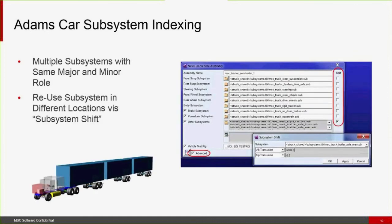Lastly on this front, I want to talk about ADAMS car subsystem indexing. This allows multiple subsystems with the same major-minor role, allowing reuse of a subsystem in different locations via a subsystem shift capability. Imagine trying to build a multi-trailer heavy vehicle — you want to repeat the trailers and repeat the axles. This capability lets you repeat those subsystems and shift them fore, aft, or up-down relative to the default position.